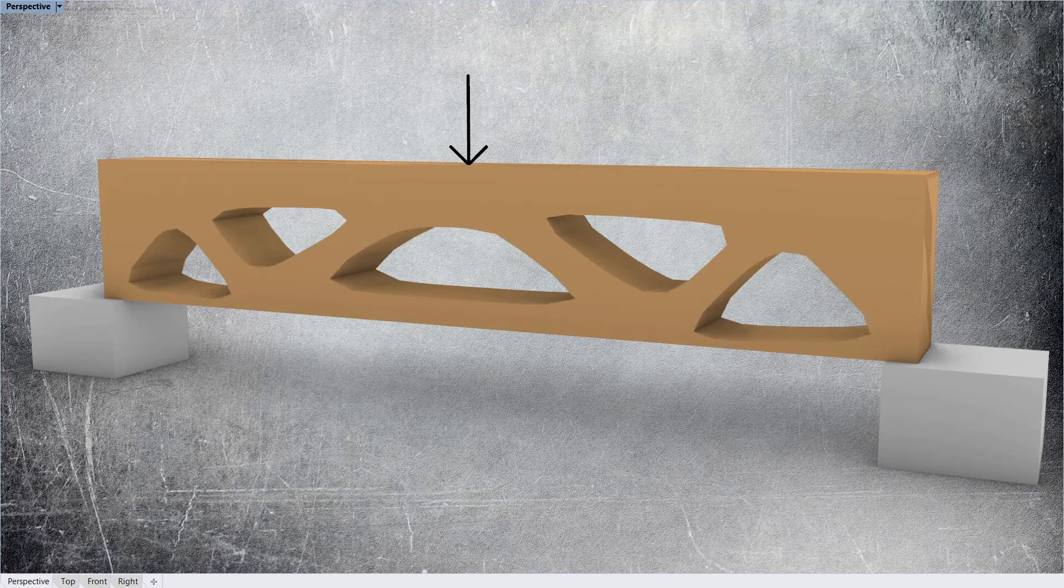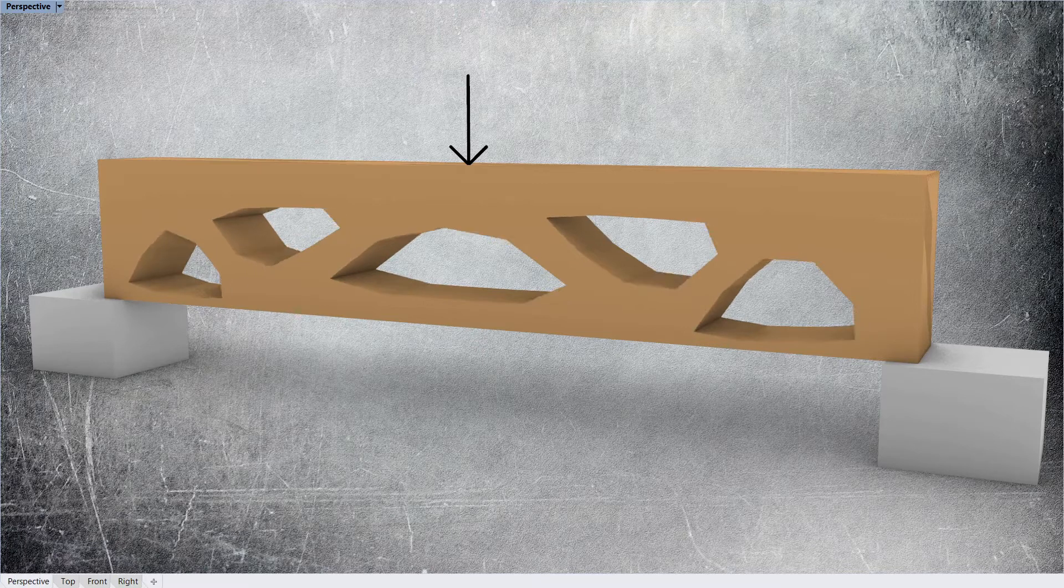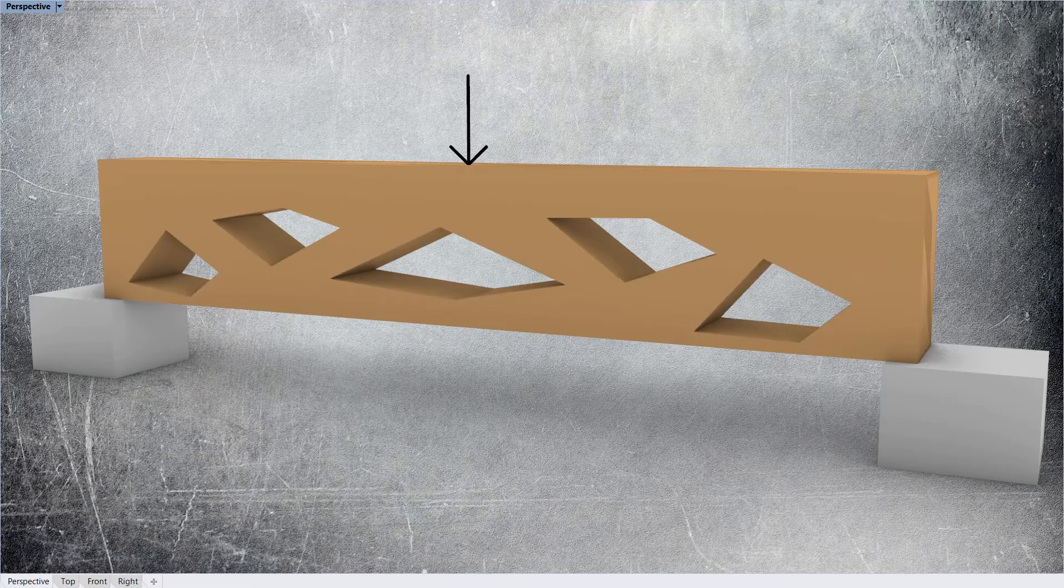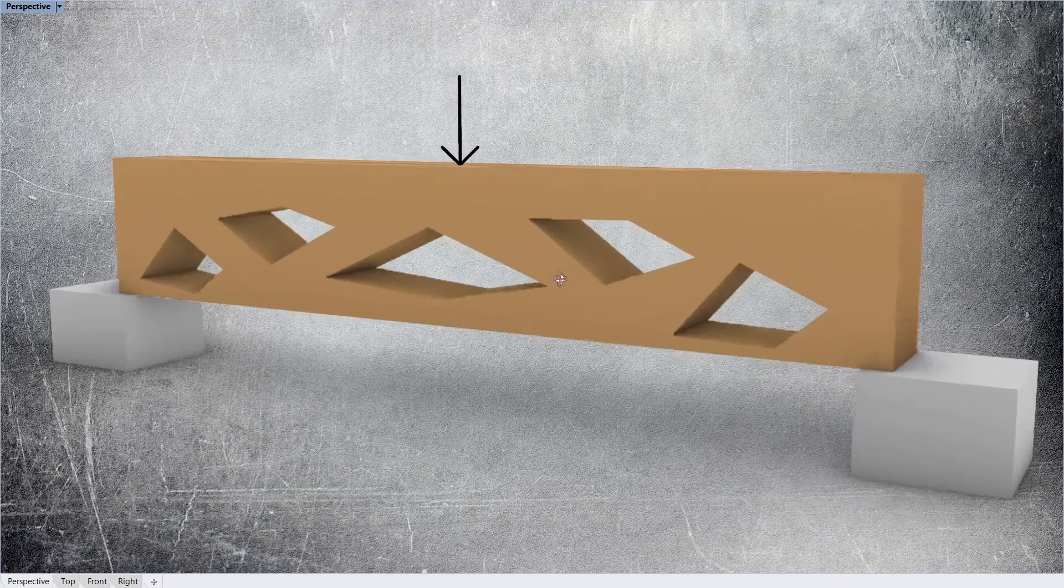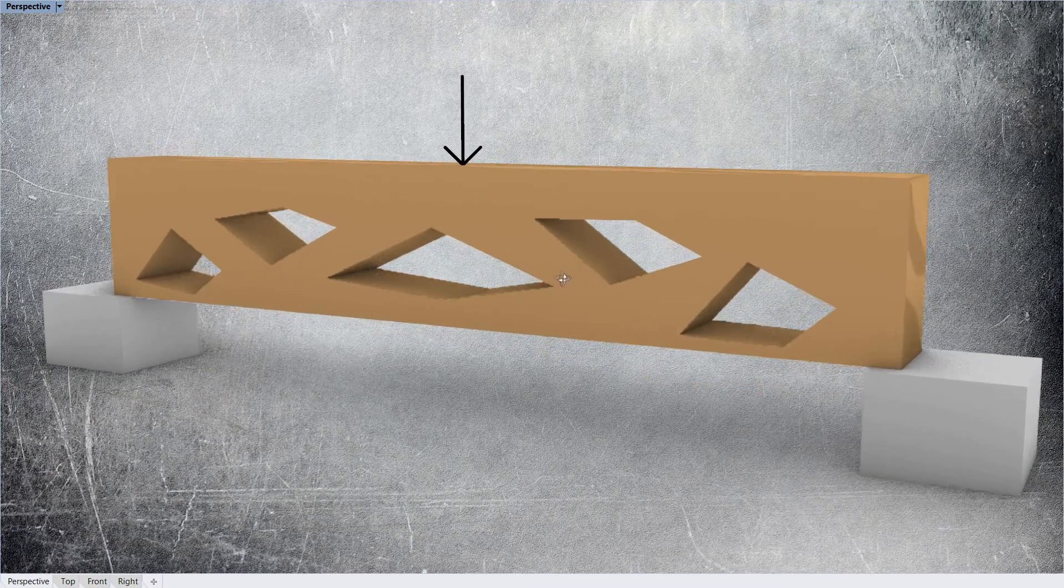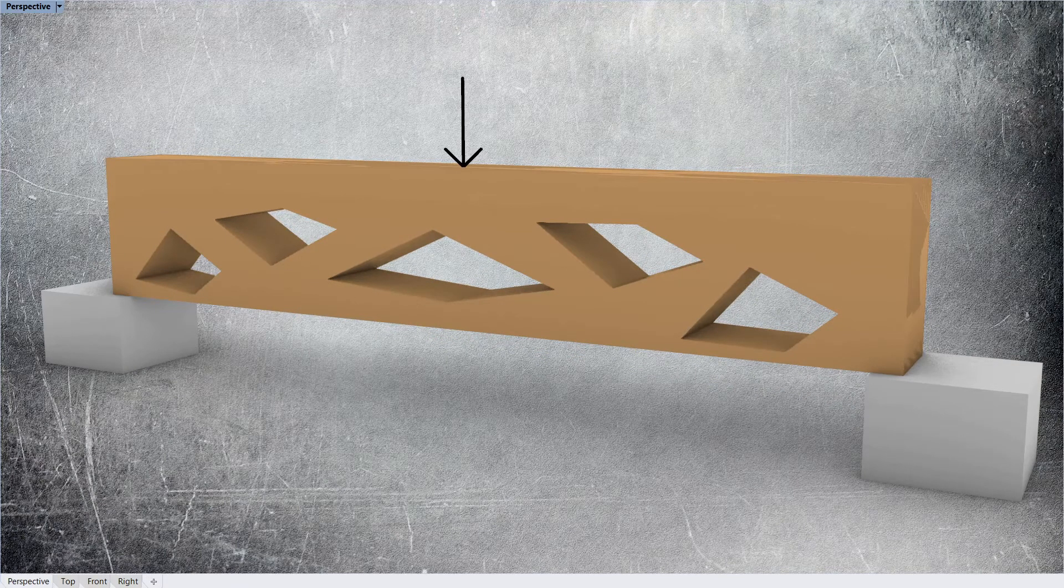And we can reduce the number of edges on the shapes to make it even simpler. If we go down to four sides only, you can start to see that that might be a possibility for someone to manufacture and maybe might not be that expensive.